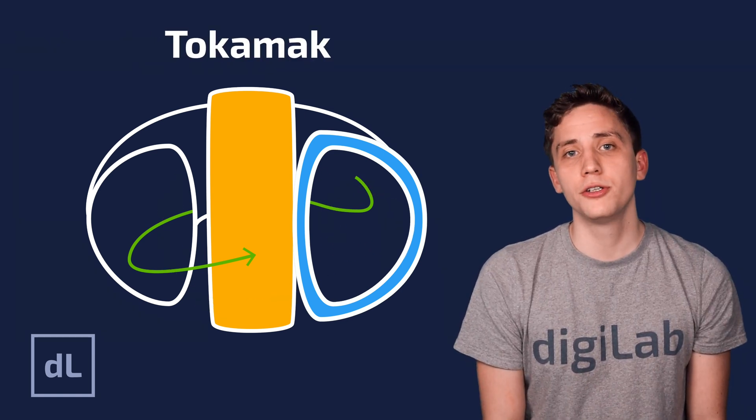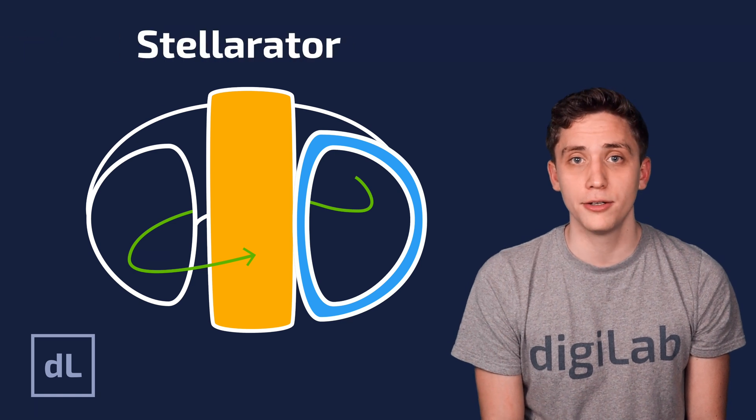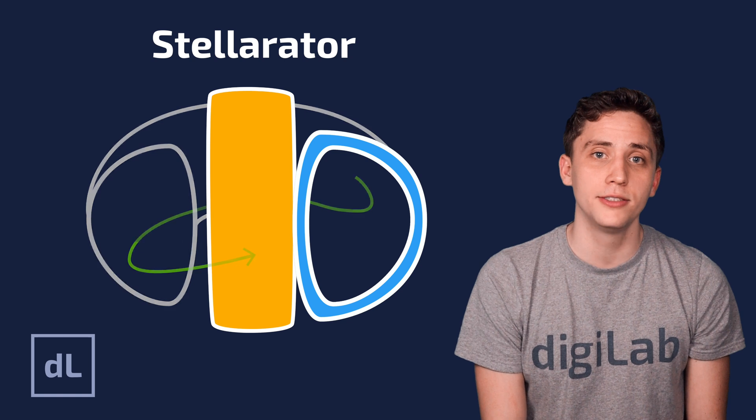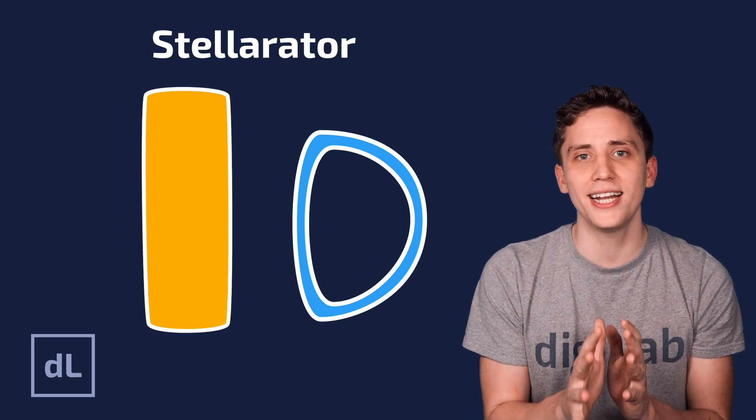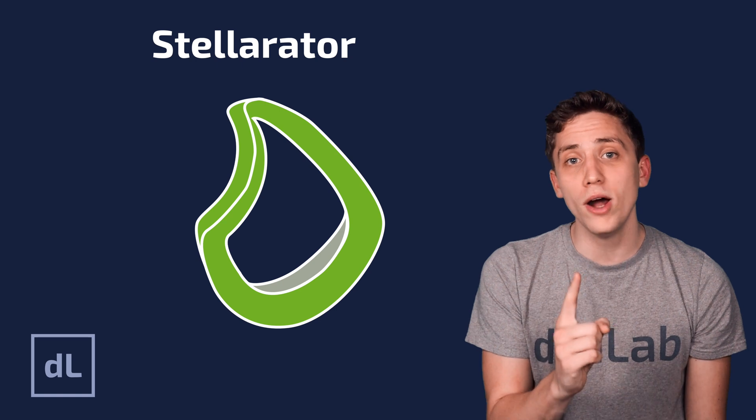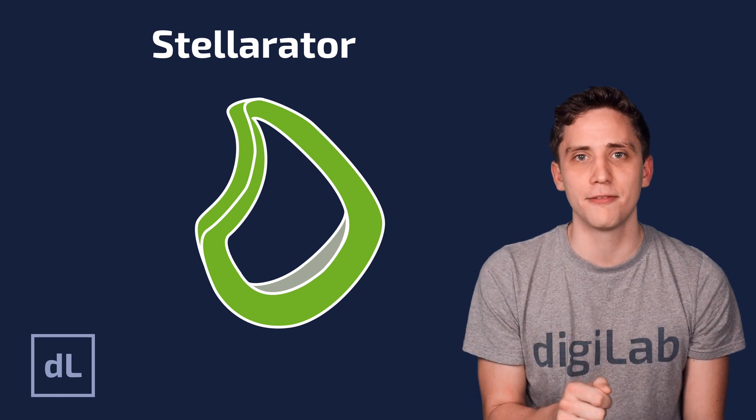But there's also a lot of research into machines known as stellarators, where to get the particles traveling on these twisted magnetic field lines, rather than using two sets of normal coils, like a tokamak, a stellarator uses one set of twisted magnetic field coils.